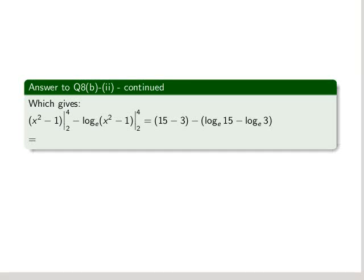So what we get is introducing our values 2 and 4 into x there, we get 15 minus 3 minus log e of 15 minus log e of 3. Now log e of 15 minus log e of 3.